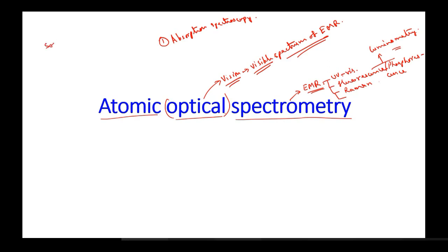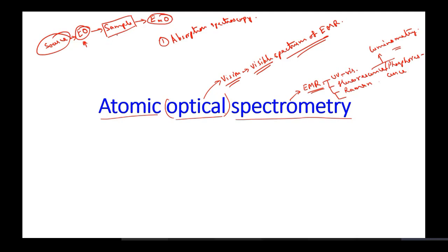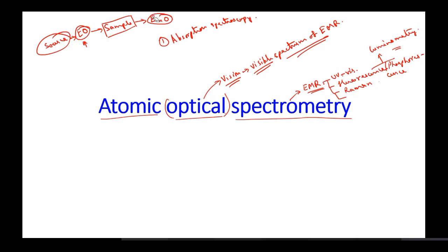In absorption spectroscopy, we had a light source, then we were having some excitation optics (EO), then we were having a sample, then in the same line we have transmission optics, and then we are having a detector.